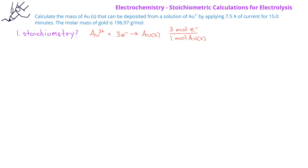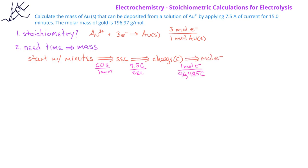Since we're given time in this problem and we want mass, we would start with the minutes, use the conversion factor 60 seconds in a minute, and use the current of 7.5 coulombs per second. The Faraday constant will be inverted, so we have 1 mole of electrons is 96,485 coulombs.